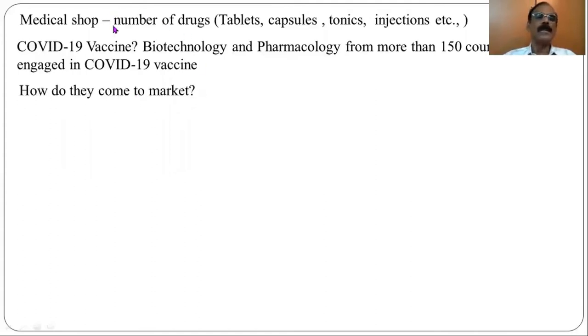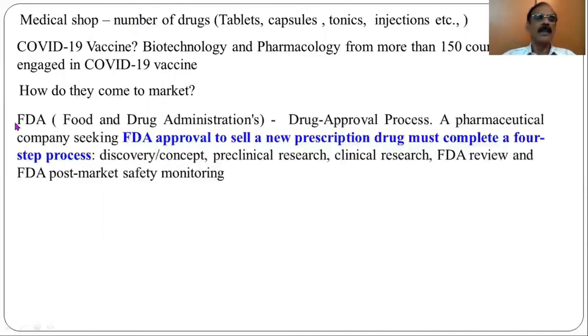How do they come to market? When you see thousands of drugs in a medical shop, how do they come to the market? FDA, Food and Drug Administration approvals to sell a new prescription drug. It must complete a four-step process.